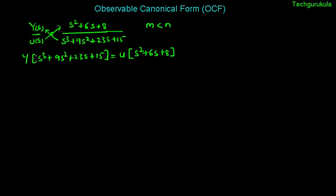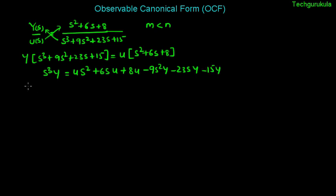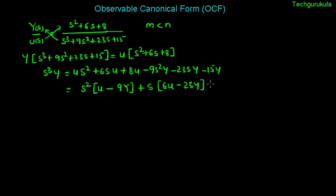Keeping the highest order of s on the left side, everything else goes to the right side. So we have u times s-squared plus 6s·u plus 8u minus 9s-squared·y minus 23s·y minus 15y. Now segregating terms based on the order of s: s-squared times (u minus 9y), plus s to the power 1 times (6u minus 23y), plus s to the power 0 terms which is (8u minus 15y).